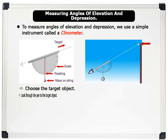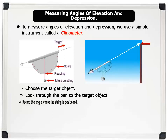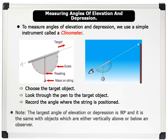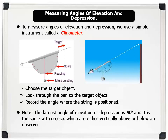To use the clinometer, we choose a target object, then we look through the pen tube attached to the protractor to the target object. The angle to which the string is positioned on the scale protractor becomes the angle of elevation of the target object. Note that the largest angle of elevation or depression is 90 degrees, and it is the same with objects which are either vertically above or below an observer. That's wonderful.